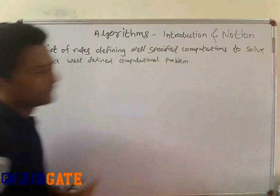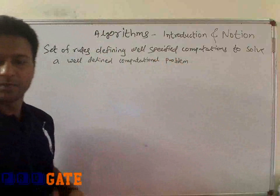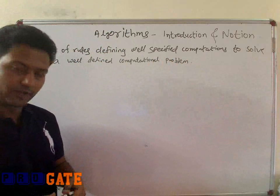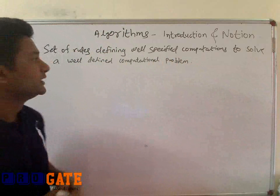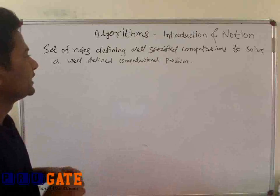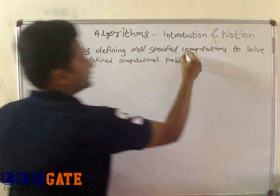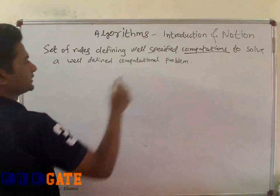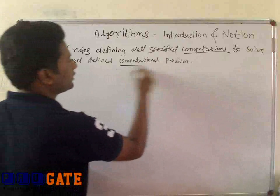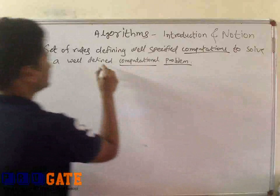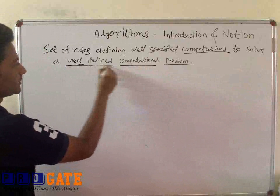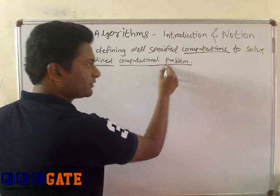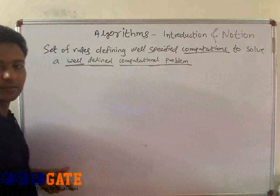This is our first attempt at trying to come up with the notion of algorithm and start formalizing it. Even in this semi-formal definition, we see a few elements which really need much more attention. First of all, what is a computation? What do you mean by a computation? And the second thing is a well-defined computational problem. Once we understand what is a computation, we will understand what is a computational problem.